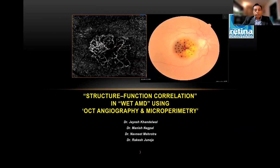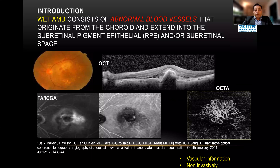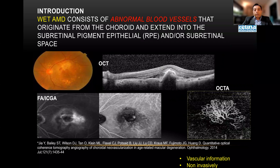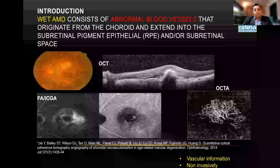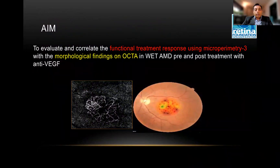I now move on to a brief aspect of microperimetry — a structure-function correlation in wet AMD using OCT angiography and microperimetry. Wet AMD consists of abnormal blood vessels under the macula; we can make out on the OCT angiography these networks which confirm the presence of an active network. We aim to correlate the functional treatment response using microperimetry with the morphological findings of OCT in wet AMD.